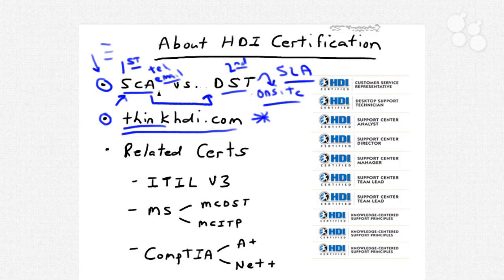There's certainly a lot of overlap between these two skill sets, but there is in fact a distinction. You could look at SCA as an entry-level help desk skill set and desktop support technician as the next frontier of that skill set.